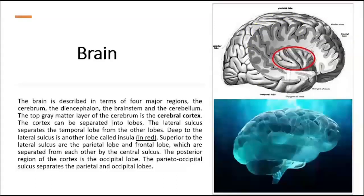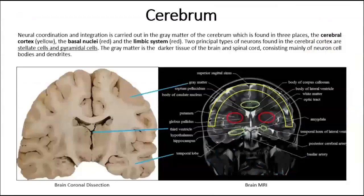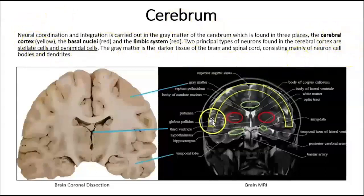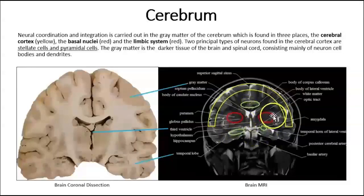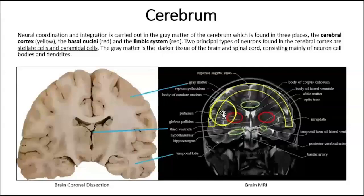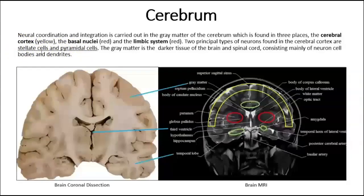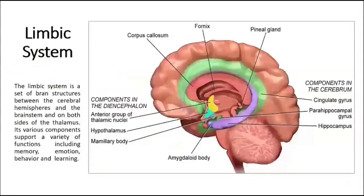All coordination and integration of different types of stimuli happens in the cerebral. The cerebral is divided into three main areas: the cerebral cortex, the basal nuclei, and the limbic system. If we enlarge the cerebral cortex, we can see very important cells: pyramidal cells and stellate cells, arranged in layers at the level of the cortex.